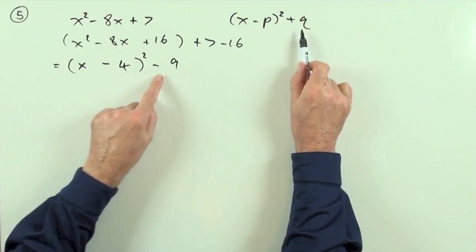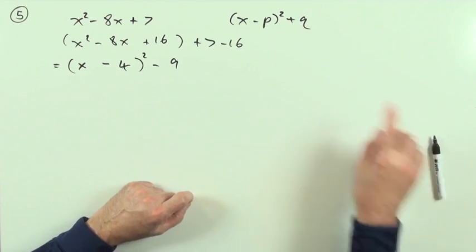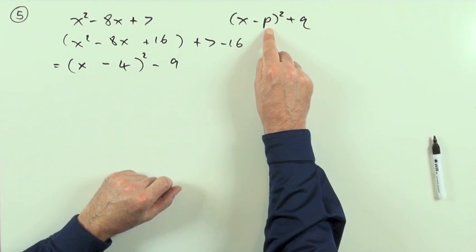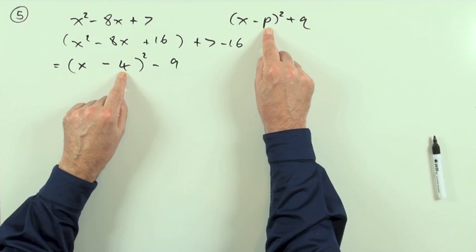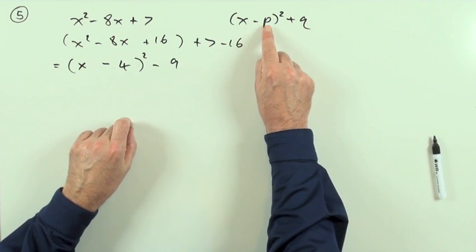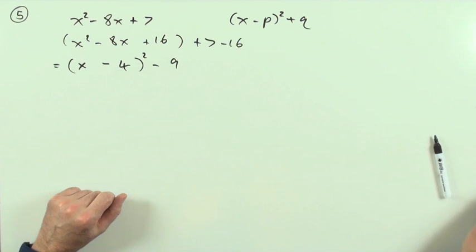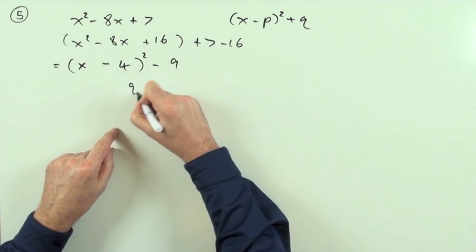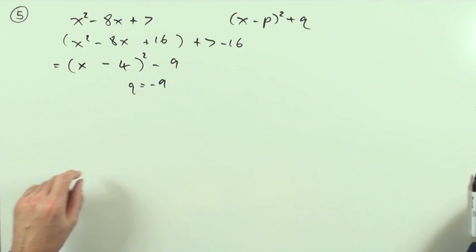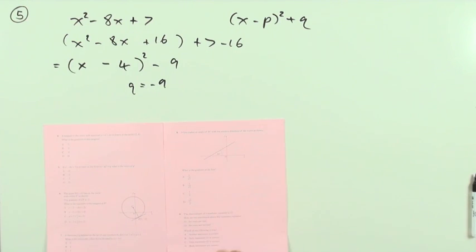So that means that P was 4 and Q was negative 9. You just have to watch the sign. It says take away P, so if it asked for P, the value would have been 4. If it had been x plus P, P would have been minus 4. It says plus Q, so that means that Q must be negative 9. So Q is negative 9, and negative 9 is answer A.